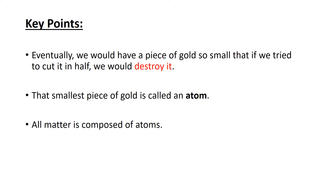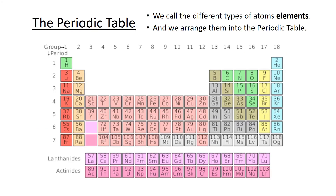This isn't true only of gold. There are 118 different types of atoms. We call the different types of atoms elements. And we arrange those elements into what's called the periodic table — that's what you're looking at right here.